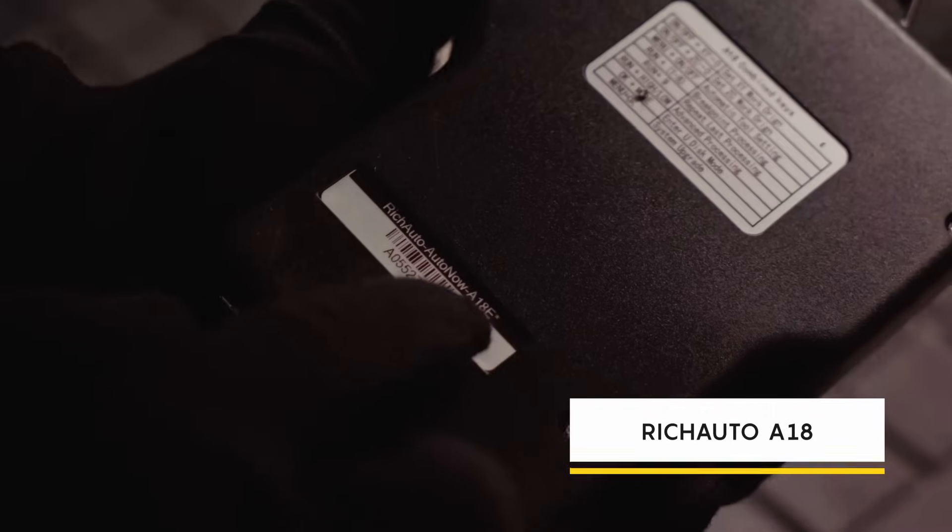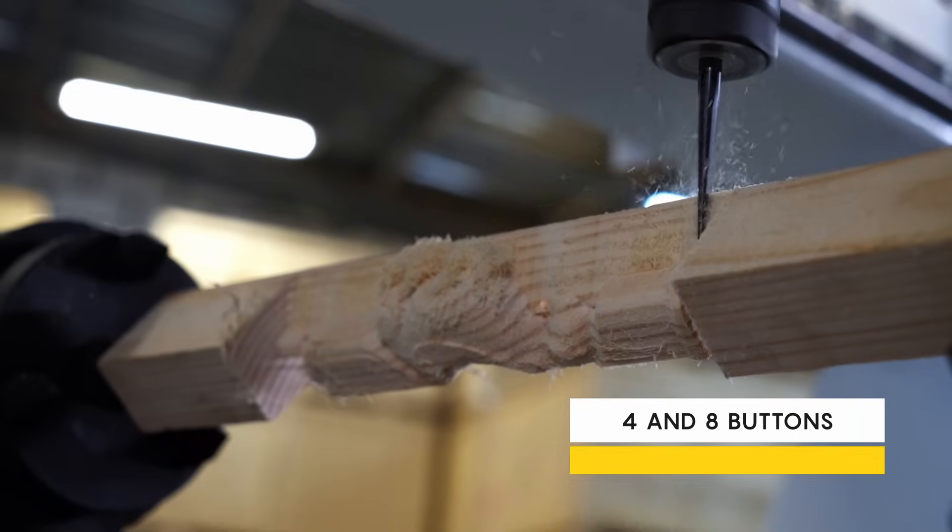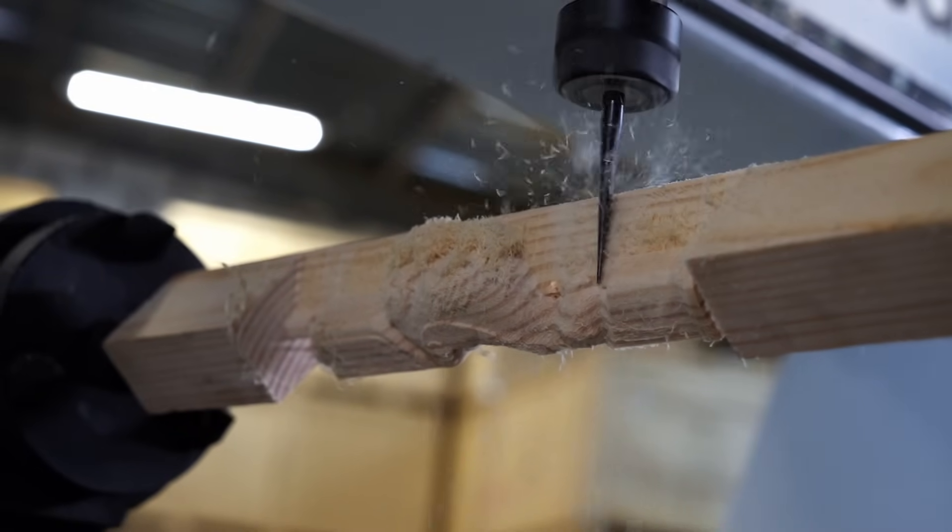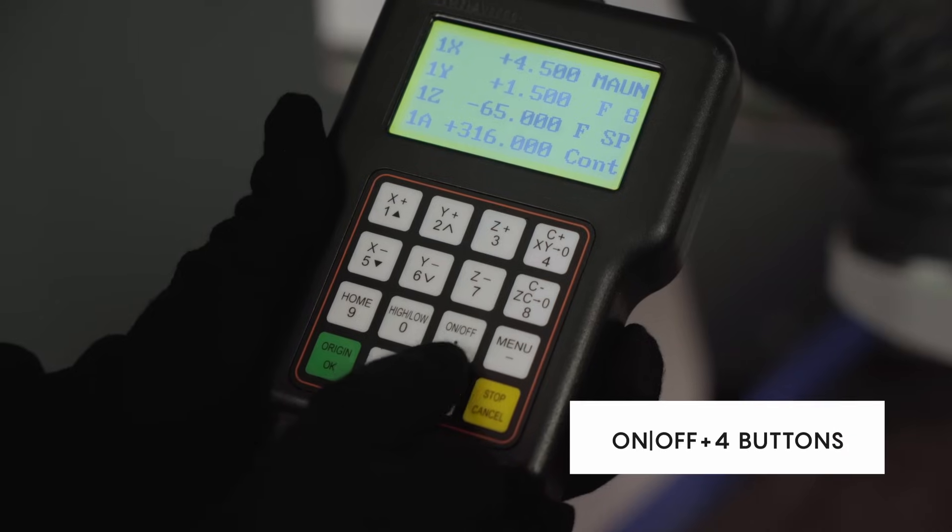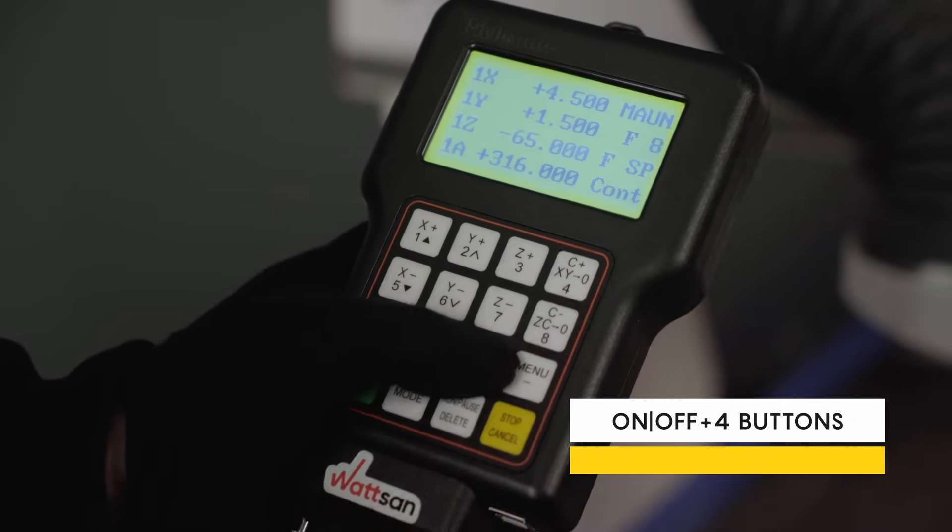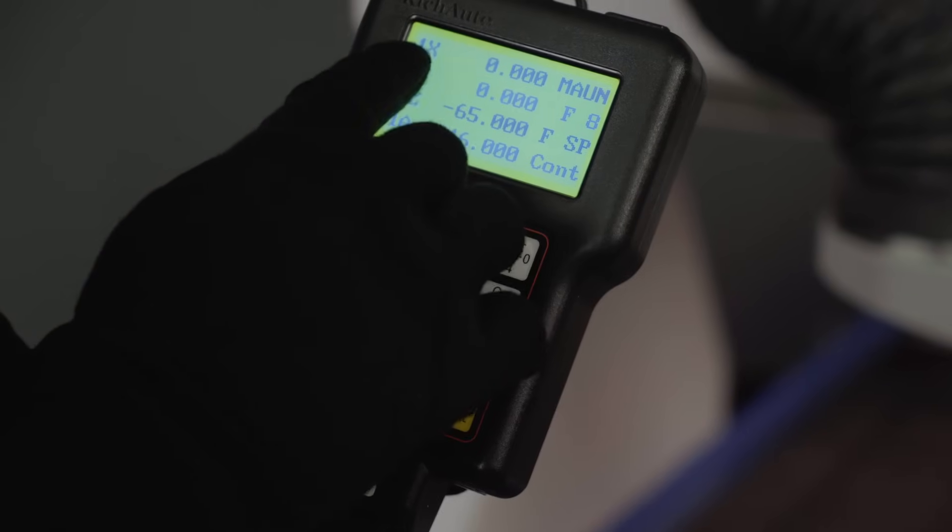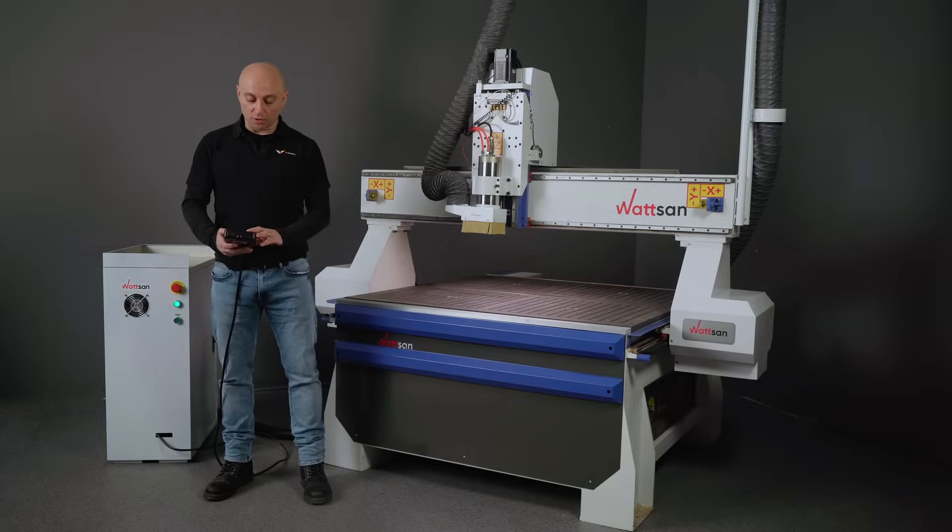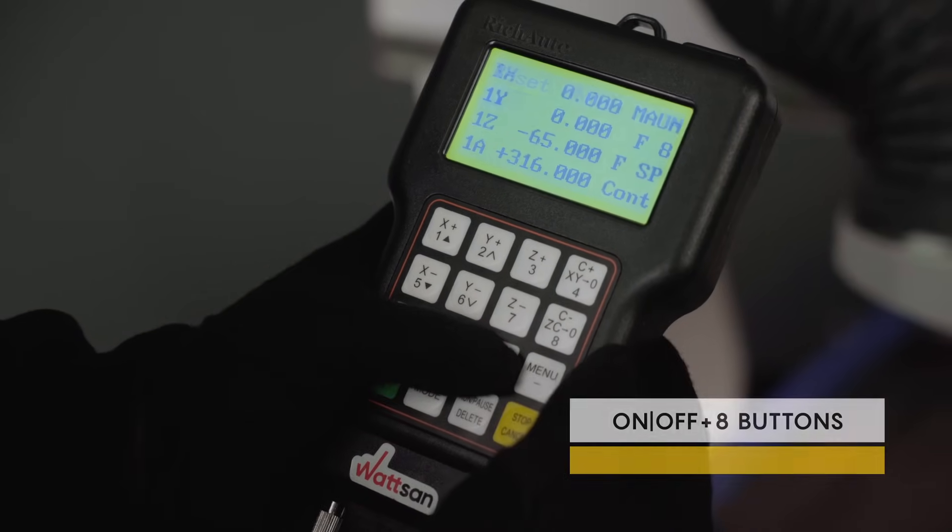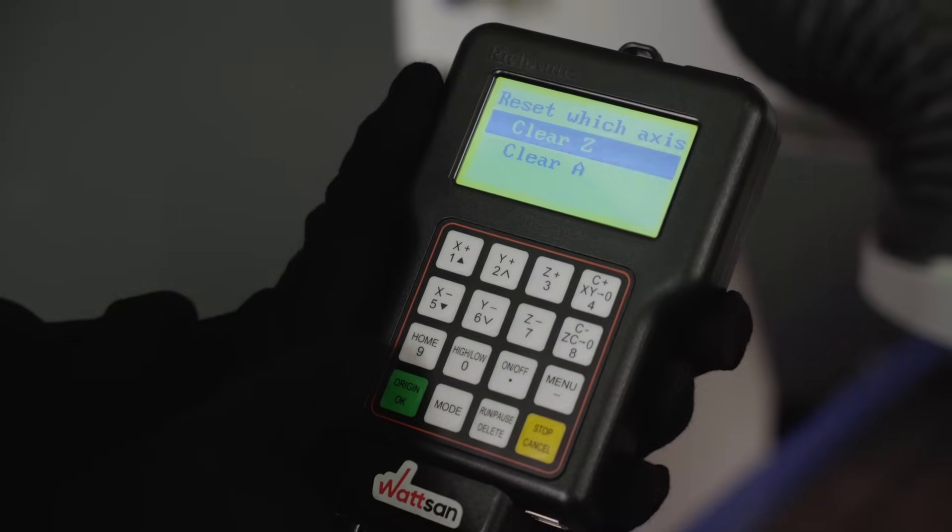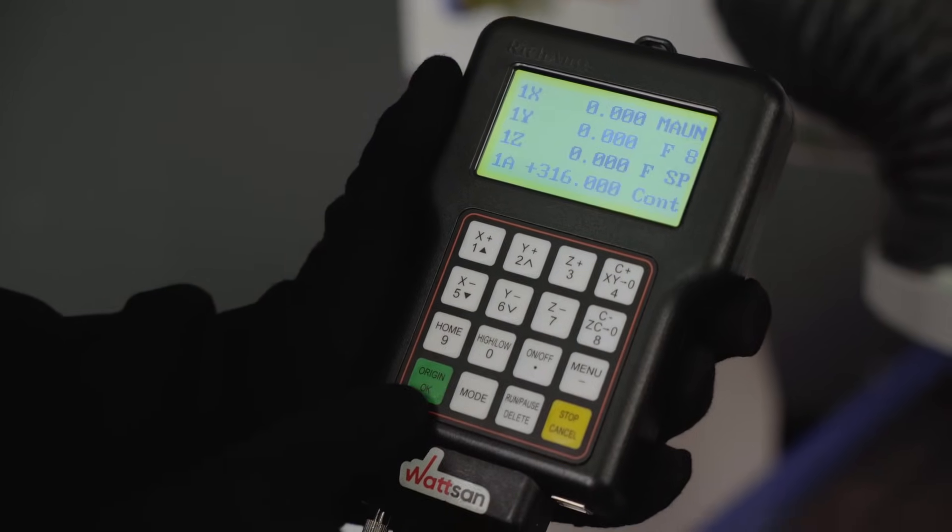In the version Rich Auto A18, the buttons 4 and 8 allow you to control the rotary device. But if you press at the same time the button On/Off and the button 4, you will give the point zero to axis X and Y. If you combine the button On/Off and the button 8, you will get to a menu and you will be able to set the zero point for the Z axis and the rotary device.